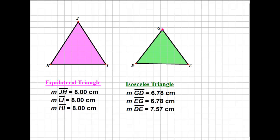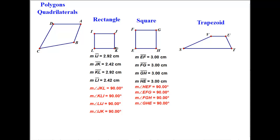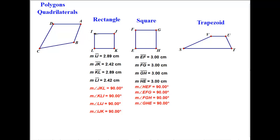Let's look at some other polygons — quadrilaterals. 'Quad' means four, so a quadrilateral is a four-sided figure. A rectangle has all four right angles — a quadrilateral in which all four angles are 90 degrees. A quadrilateral with all four right angles and all four equal sides is called a square. A trapezoid is a quadrilateral where exactly one pair of sides is parallel.